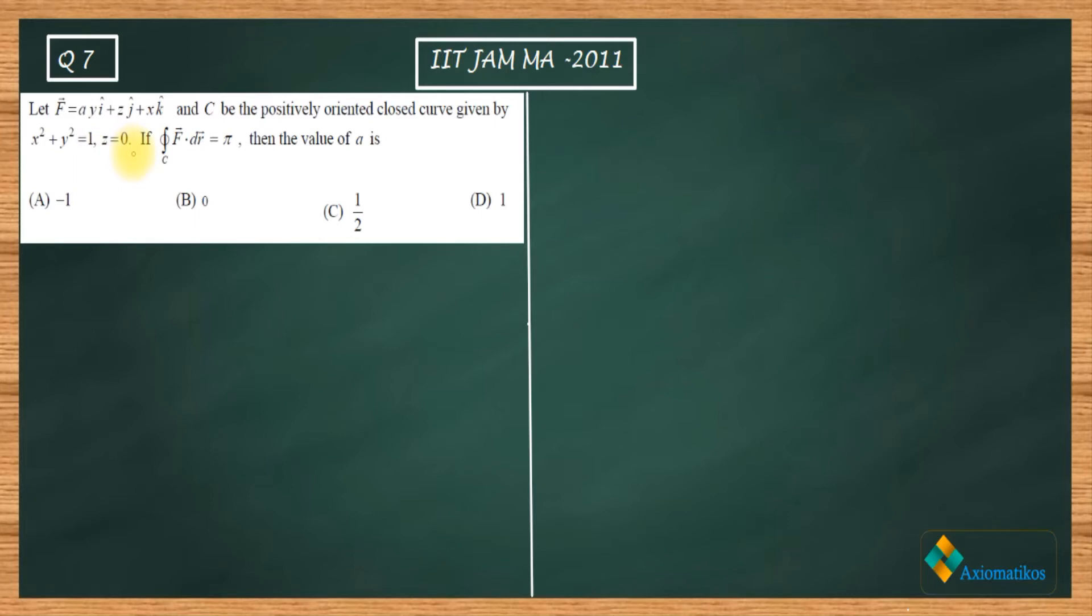z = 0. Now it is given to you that ∫f·dr is equal to π. That means the line integral of this is π. Then we have to evaluate the value of a.